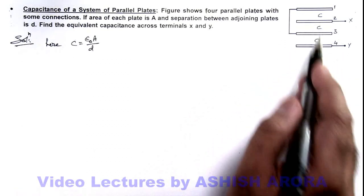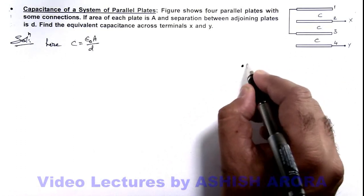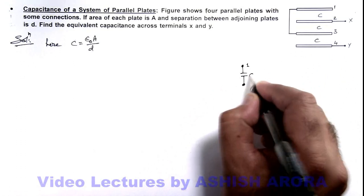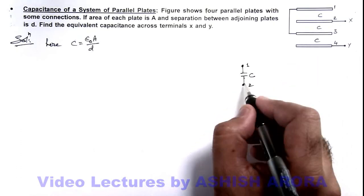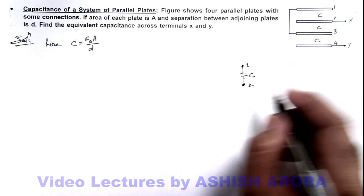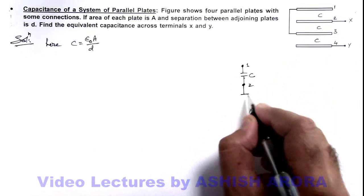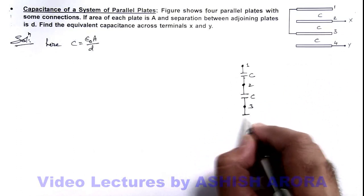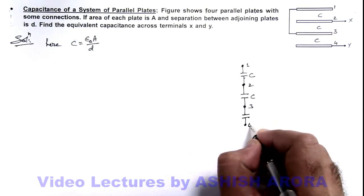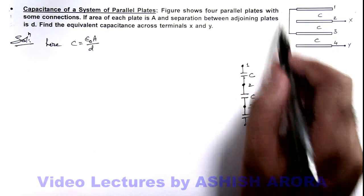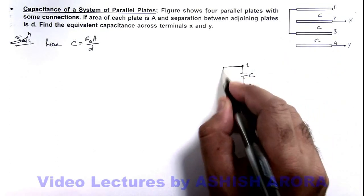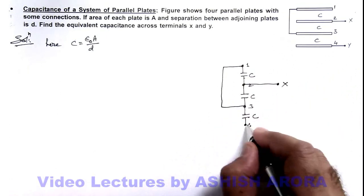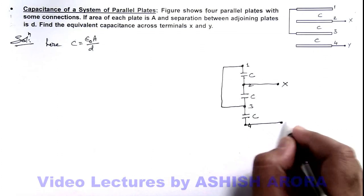Now these three capacitors we can draw in this combination. If this is plate 1, there is a capacitor c between plate 1 and plate 2. These dots are representing here as plates, and between 2 and 3 again there is a capacitor c. Here as per the connections, plate 1 is connected to plate 3, and 2 is connected with terminal x and 4 is also connected with terminal y.